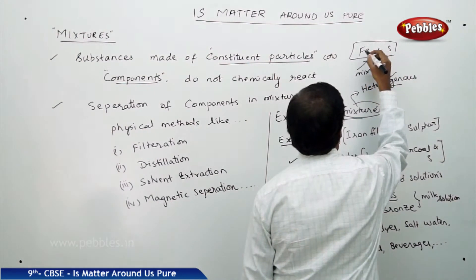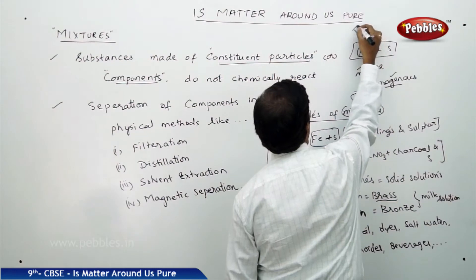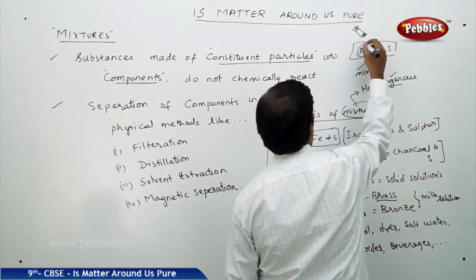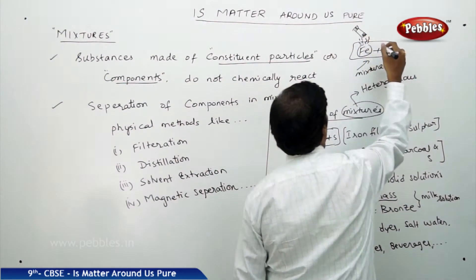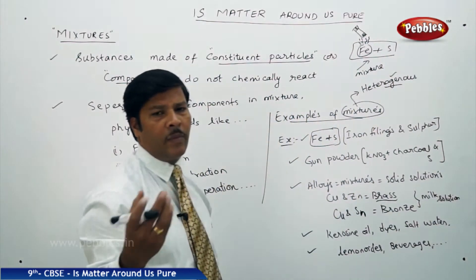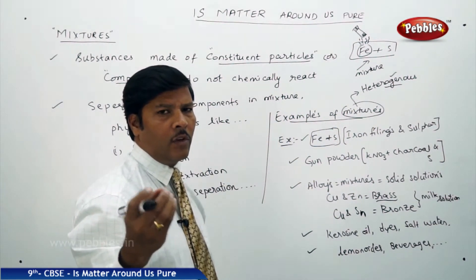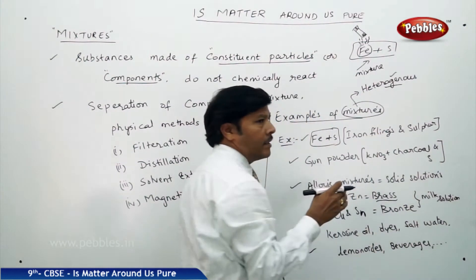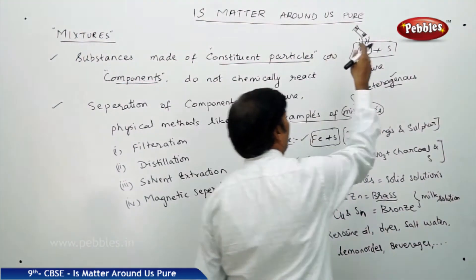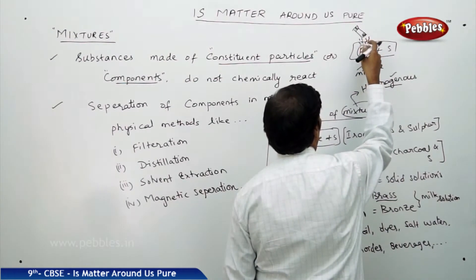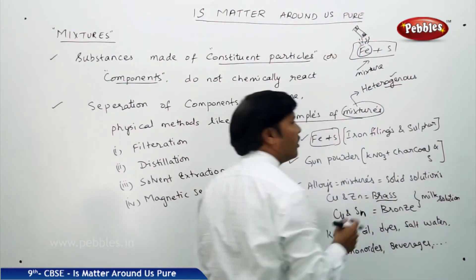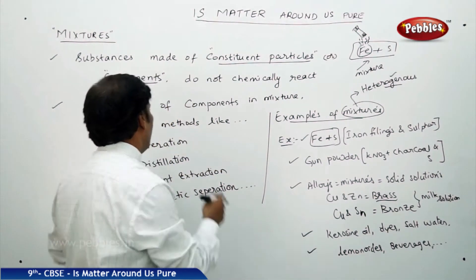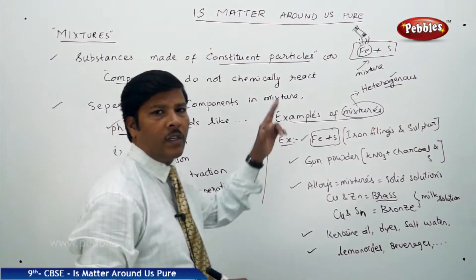What I am doing here is bringing one magnet — you bring a magnet which is made up of one north pole and one south pole. Because iron is a magnetic substance, it will get attracted. You find that all the iron filing particles, the fragments of iron particles, they stick to the magnet and the remaining component, sulphur, remains unattracted. In this way, this is nothing but a physical process — you are separating the iron filing particles from the sulphur through a physical method.